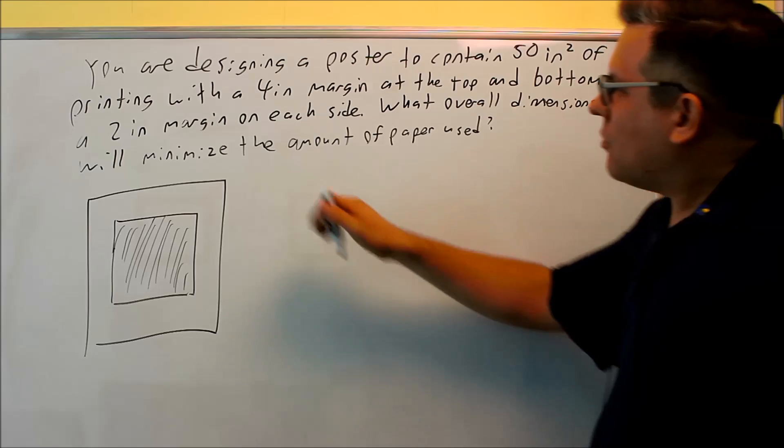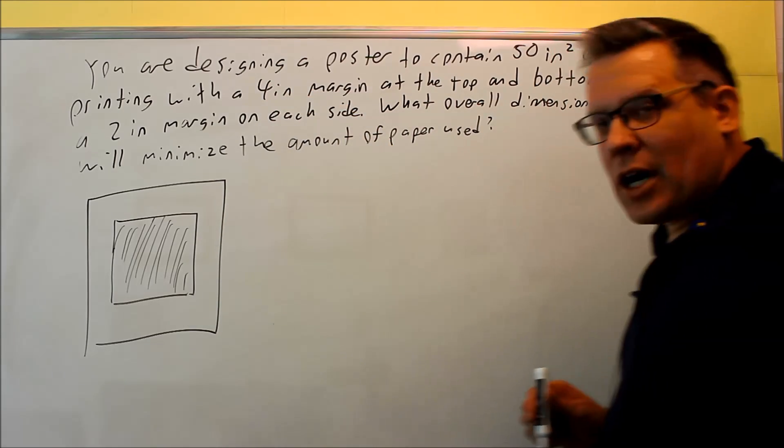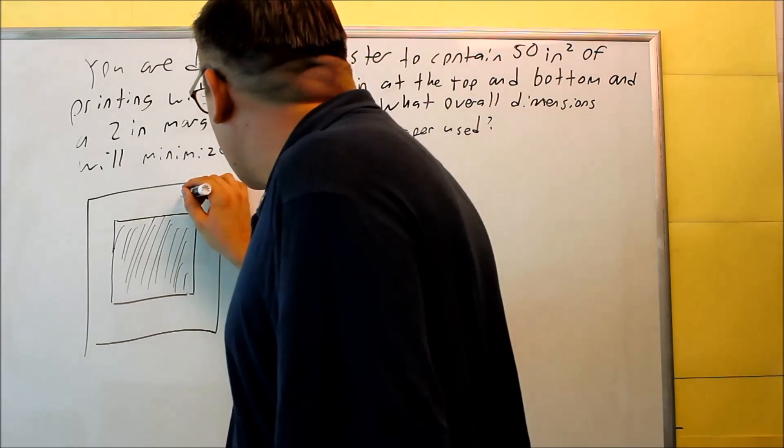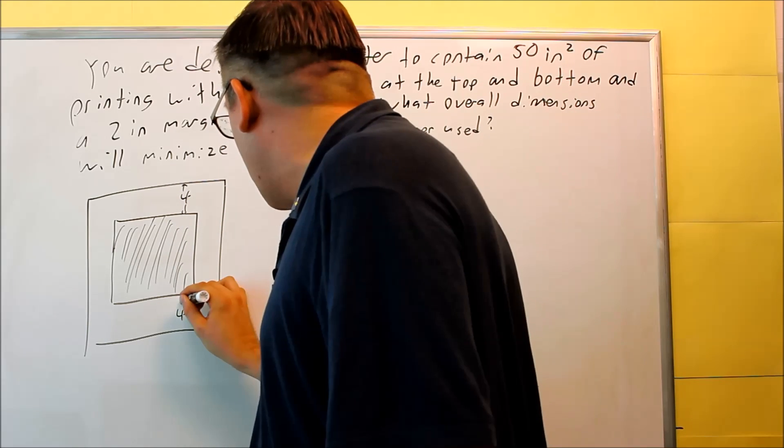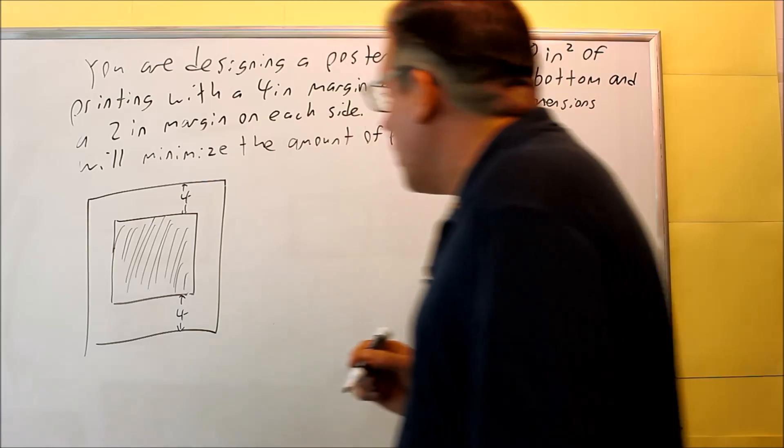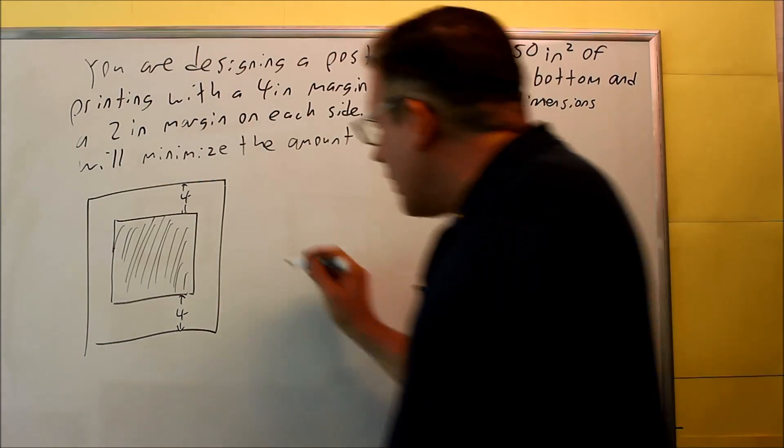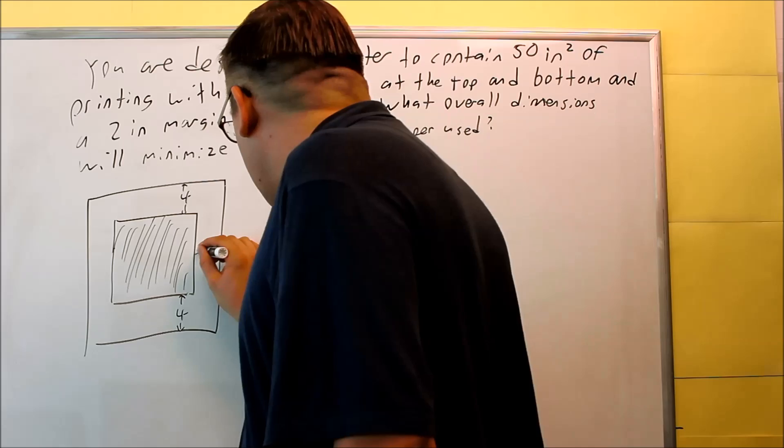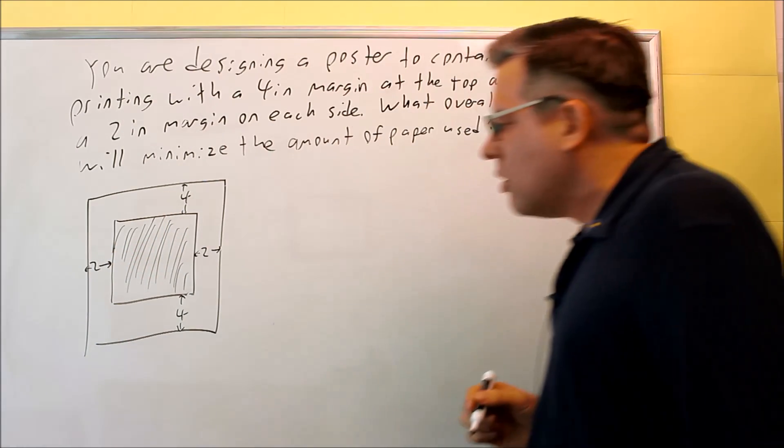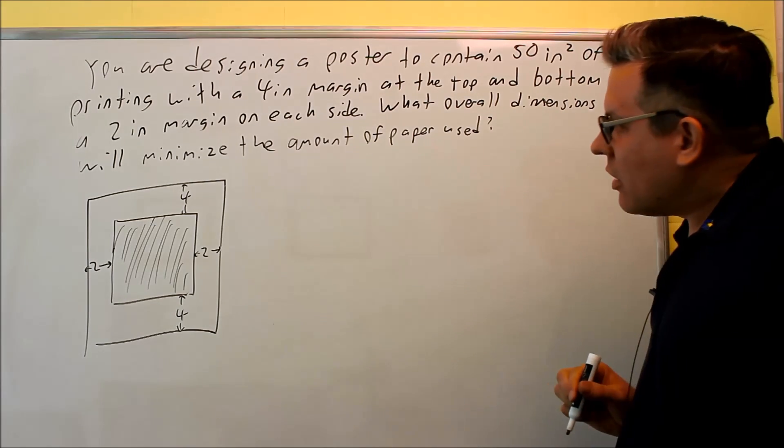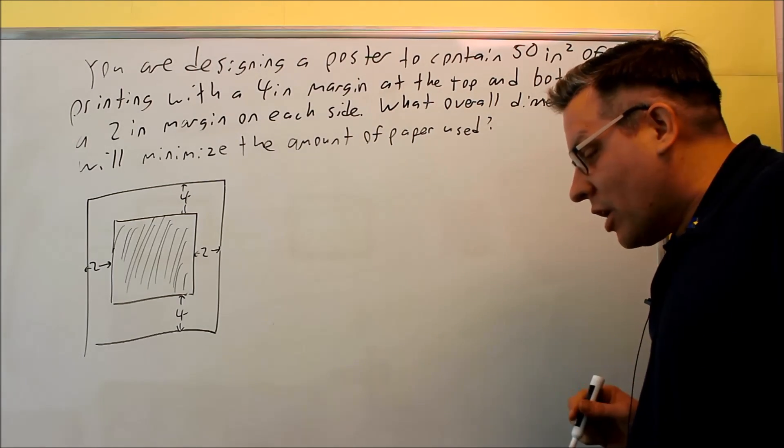It has 4 inch margin at the top and the bottom, which means that this is going to be 4 going up and down. And we have a 4 going up and down right here. We have a 2 inch margin on each side, so this will be a 2 here, and we have a 2 over here as well. So that's basically what it's telling us to do.